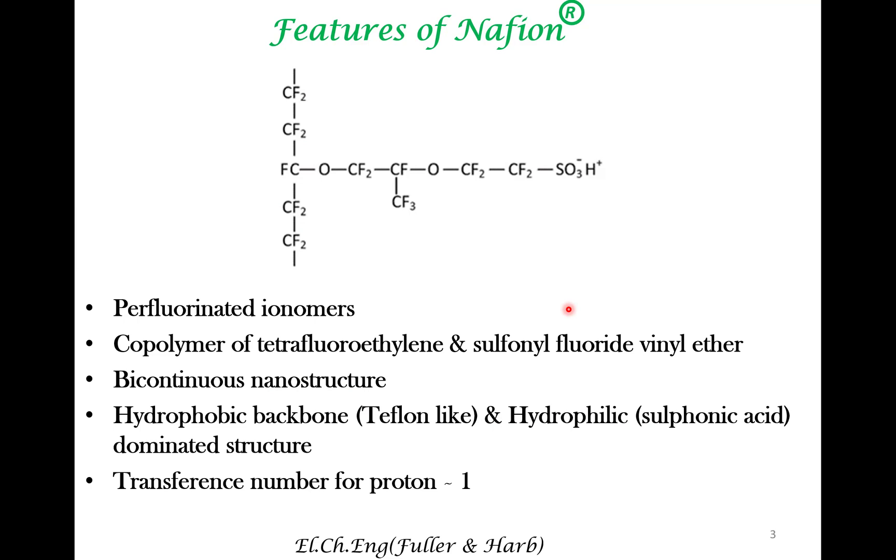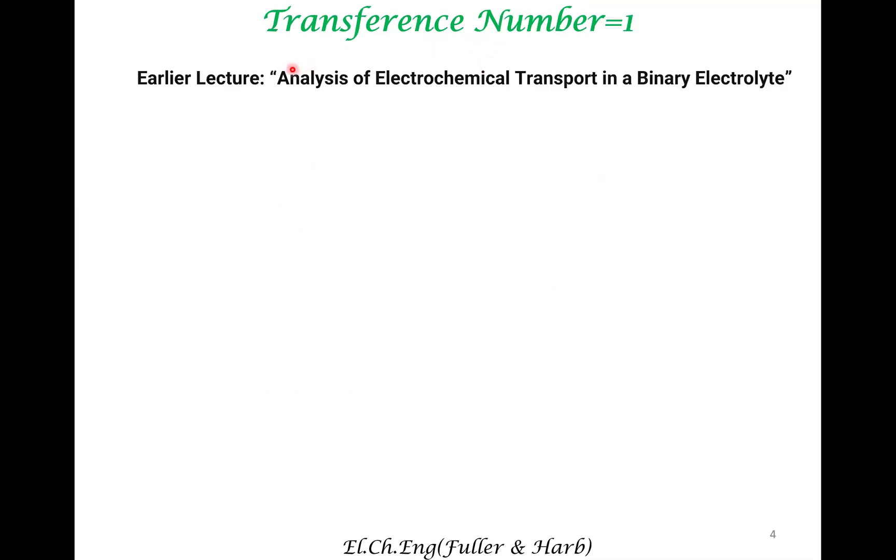The important feature is that the transference number for proton is one. We have already looked at what we mean by transference number. If you are unsure, please look at this lecture wherein we elaborated the meaning of transference number. So if you can represent current versus potential relationship using a relationship that is akin to Ohm's law, this is applicable in the absence of concentration gradient. We define transference number in that context. So transference number refers to the current carried by a species i. So this is the current carried by species i. The denominator indicates the sum total of current carried by all species.